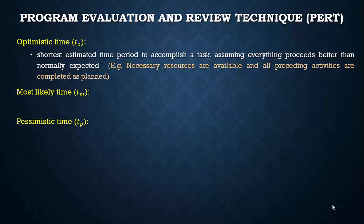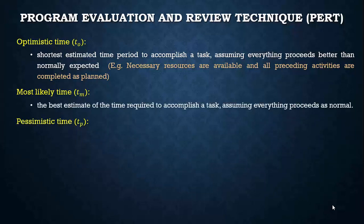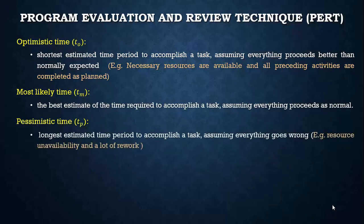Most likely time is the best estimate of the time required to accomplish a task, assuming everything proceeds as normal. Pessimistic time is the longest estimated time period to accomplish a task, assuming everything goes wrong — meaning resource unavailability and a lot of rework needed for individual activities.